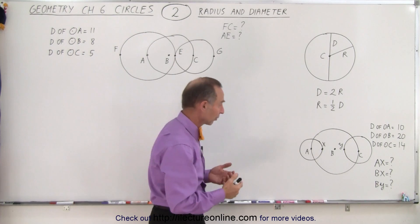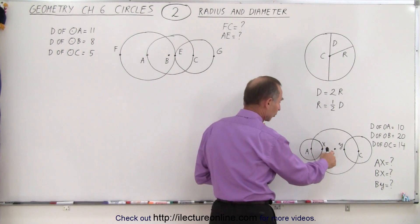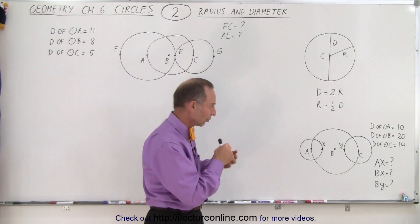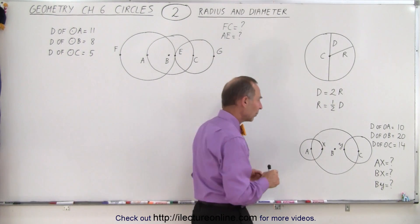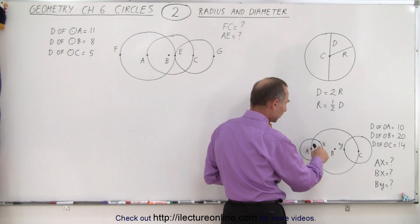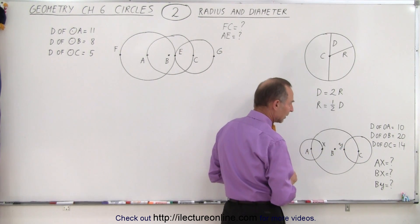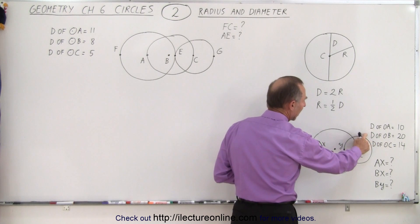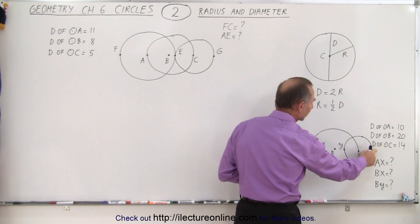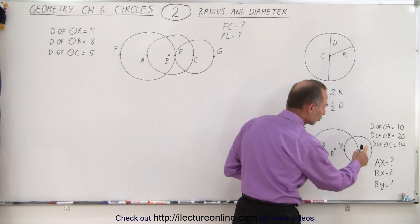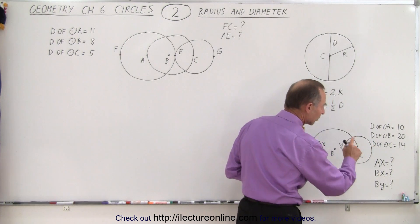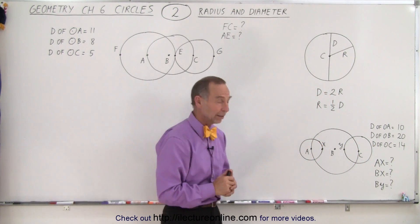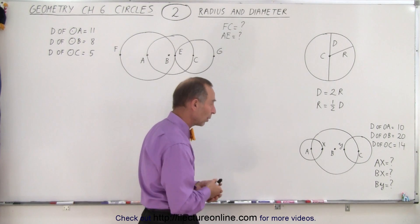Let's say we have three circles: circle A, circle B, and circle C. We indicate the circles with their central point, and we also have points X and Y. We're given that the diameter of circle A is 10, the diameter of circle B is 20, and the diameter of circle C is 14. We're trying to find the distance from A to X, from B to X, and from B to Y.